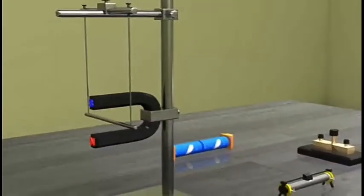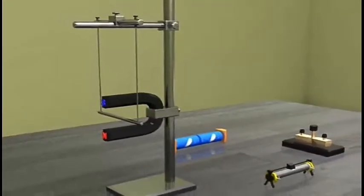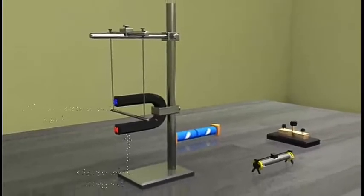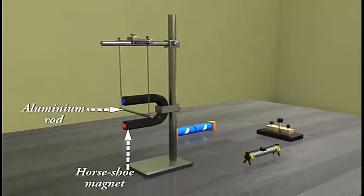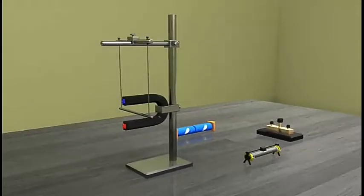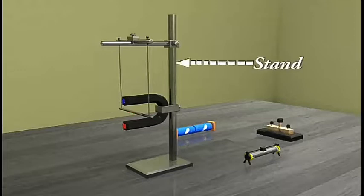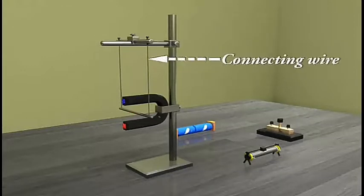Let us try to understand this with the help of a simple demonstration using a small aluminium rod and a horseshoe magnet. Here in this activity, AB is a 5 cm long aluminium rod suspended horizontally from a stand using two connecting wires.